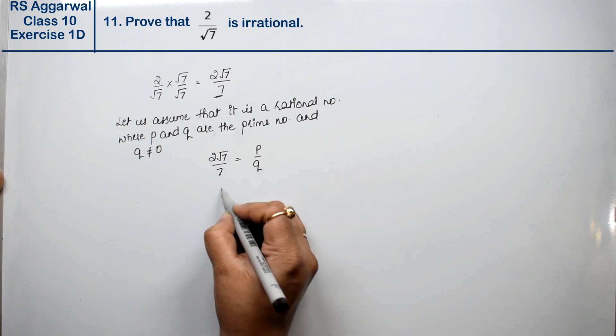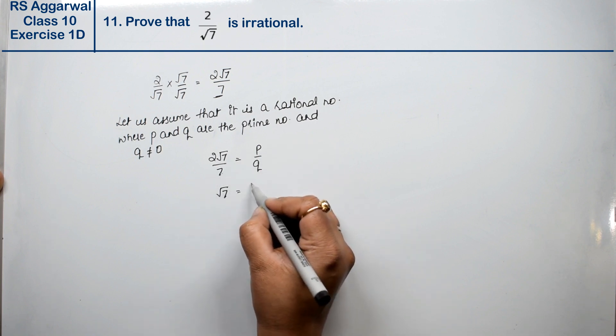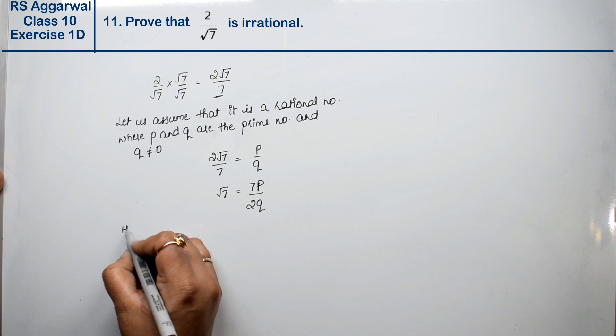Now rearranging, root 7 equals 7p upon 2q.